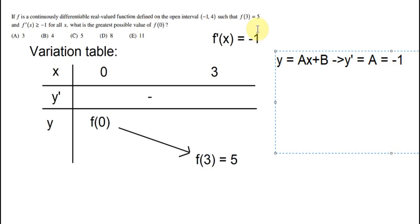Now, we have x = 3 and y = 5. We need to find the value of B. So we have 5 = (-1)(3) + B, which gives us B = 8.